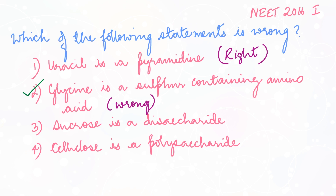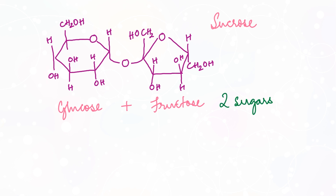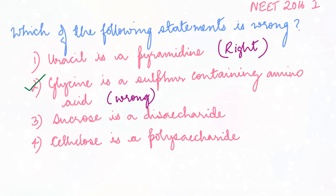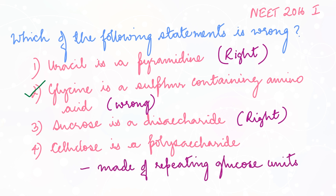Let's confirm the other two statements. Sucrose is a disaccharide: glucose and fructose are linked through a glycosidic bond — two monosaccharides make a disaccharide. That is correct. Cellulose is a polysaccharide made up of repeating glucose units. That is also correct.